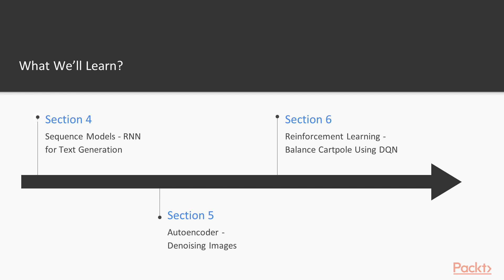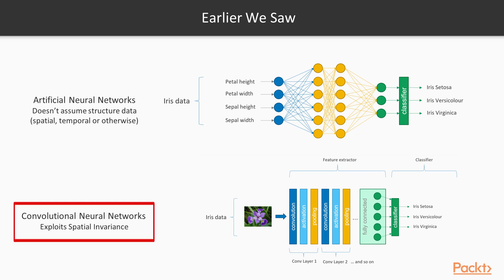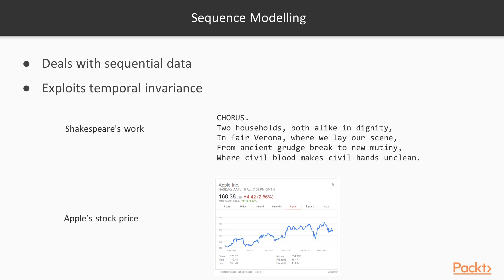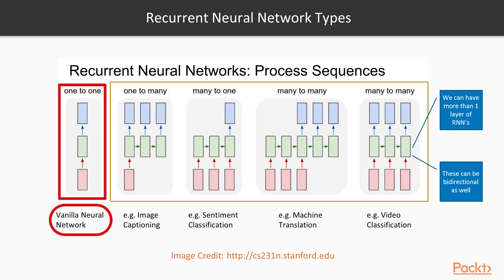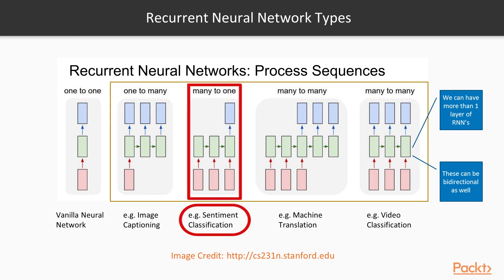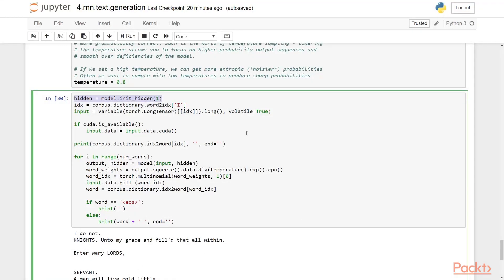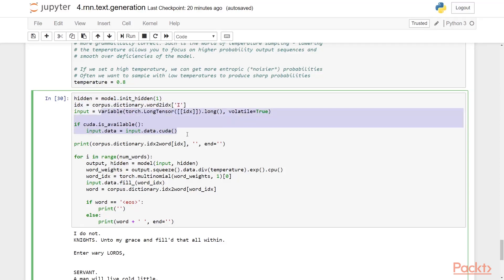Section 4 is Sequence Models: RNN for Text Generation. While section 3 was about data with spatial significance — the pixels in an image — section 4 is about data which has temporal significance: sequences. Think of written texts and stock prices, whose elements make sense only when seen in particular order. We learn about RNNs and variants, we learn about word embeddings — a smart way to represent words in vector space — and we'll create a model to generate Shakespeare-like writing.